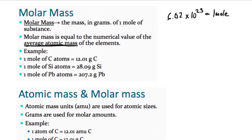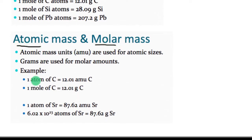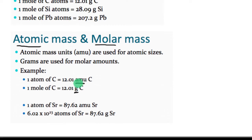When talking about atomic mass, we're dealing with individual atoms, using the unit amu. So one atom of carbon has a mass of 12.01 atomic mass units. But if I have one mole of carbon, then I have 12.01 grams of carbon. It all depends on the unit — you really have to be careful whether you write atomic mass units, meaning individual atoms, or grams, meaning molar amounts.